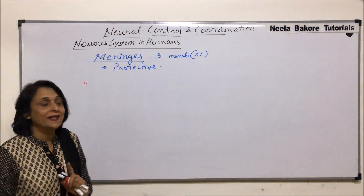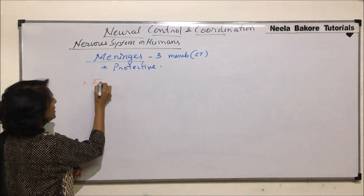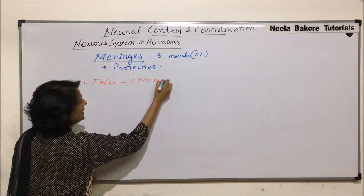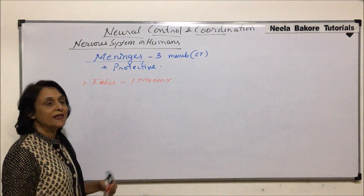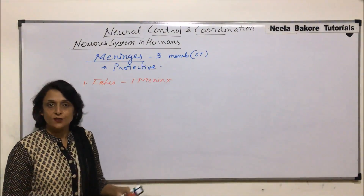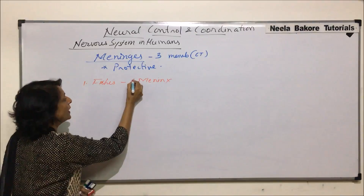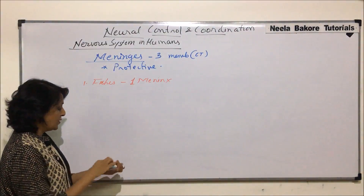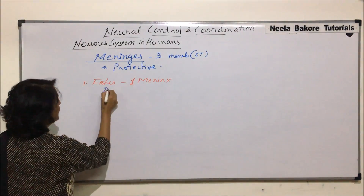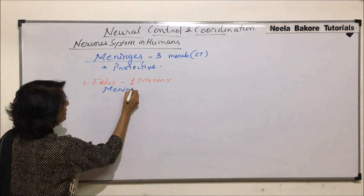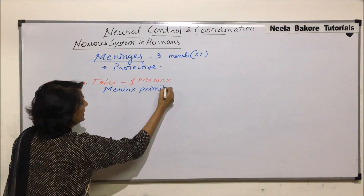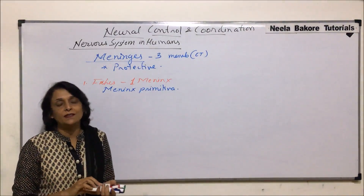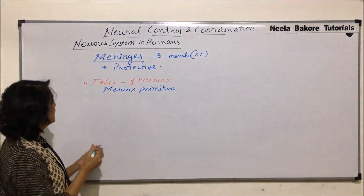In case of fishes there is only one meninx. Singular is known as meninx and plural are called meninges. In fishes it is known as meninx primitiva — a very simple, primitive type of membrane which protects the simple brain that they have.